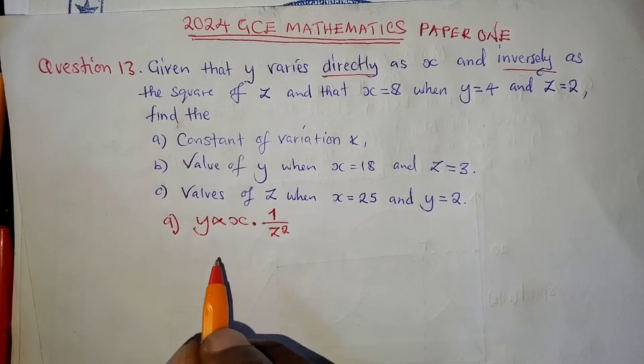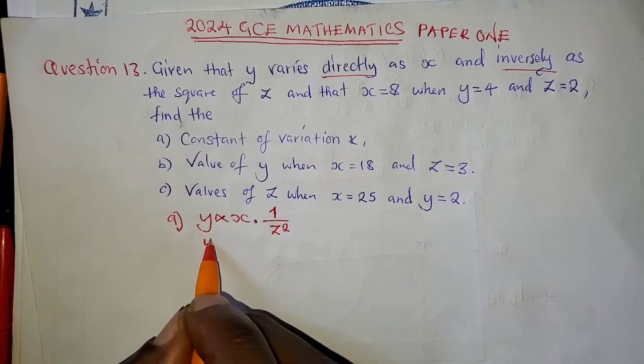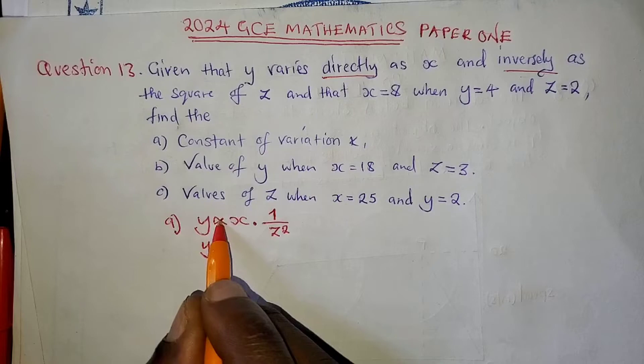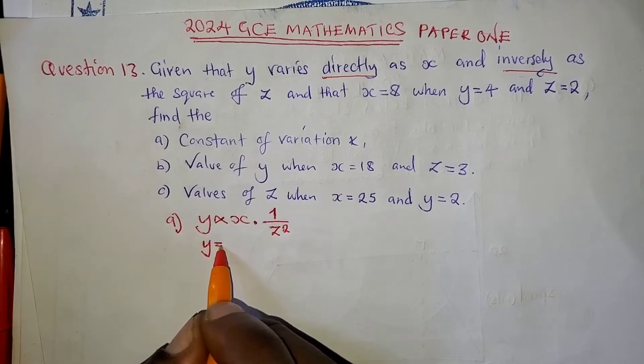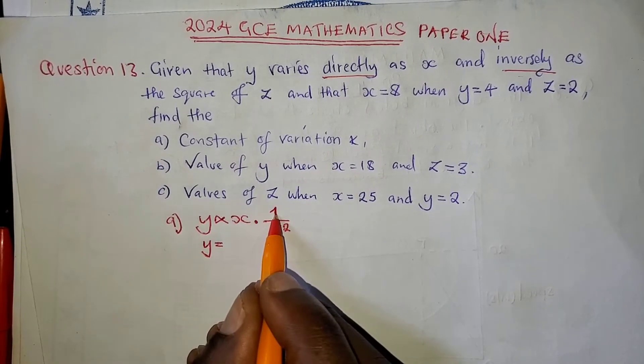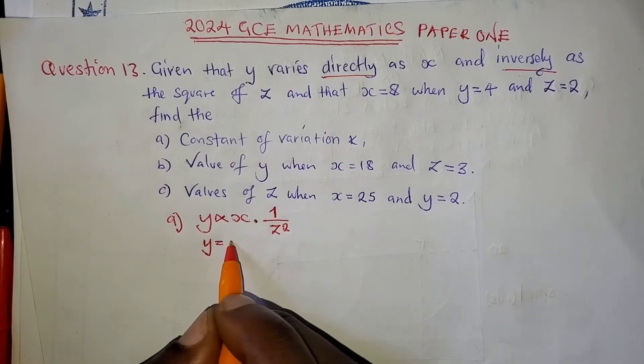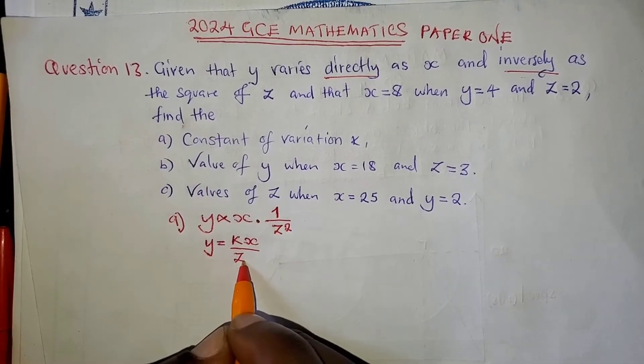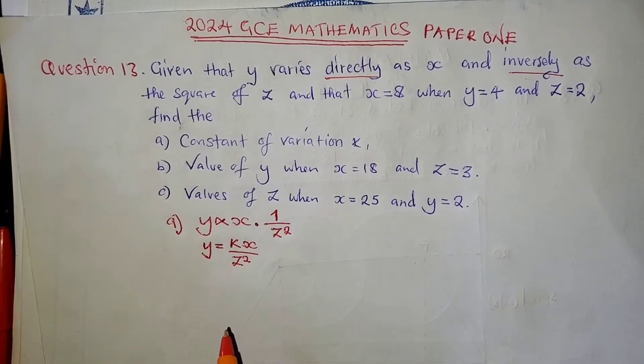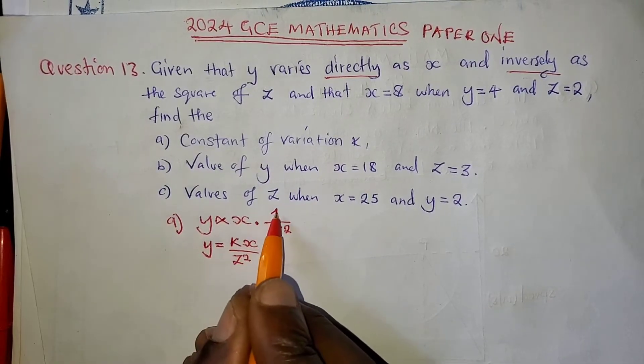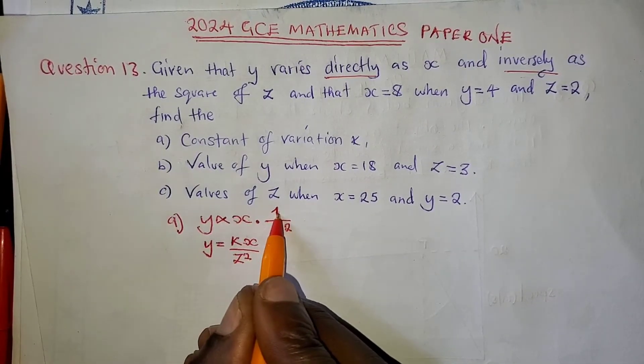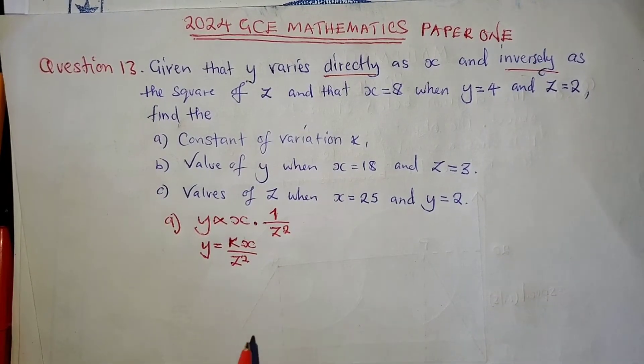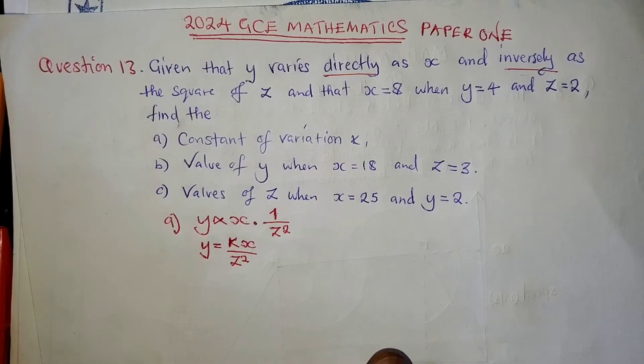Now, what you do here, you make this one as an equation, form an equation. You replace this variation symbol with an equal sign, then multiply X times 1, it becomes X, and the constant of variation K appears, so it will be Y = KX over Z squared. So, this is the formula we are going to use.